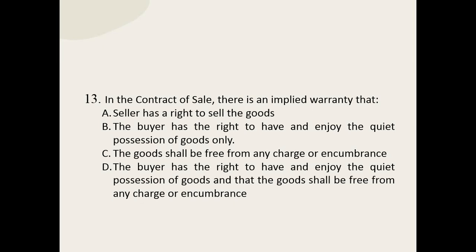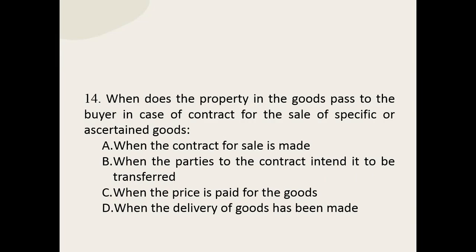Q13: In the contract of sale, there is an implied warranty that — the options are: the seller has a right to sell the goods; the buyer has the right to have and enjoy the quiet possession of goods only; the goods shall be free from any charge or encumbrance; or the buyer has the right to enjoy quiet possession of goods and that the goods shall be free from any charge or encumbrance. The correct option is D — the last one.